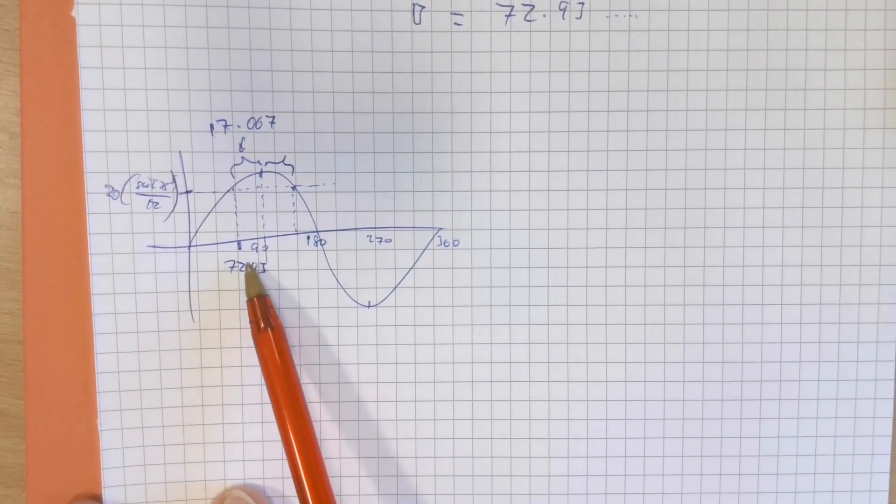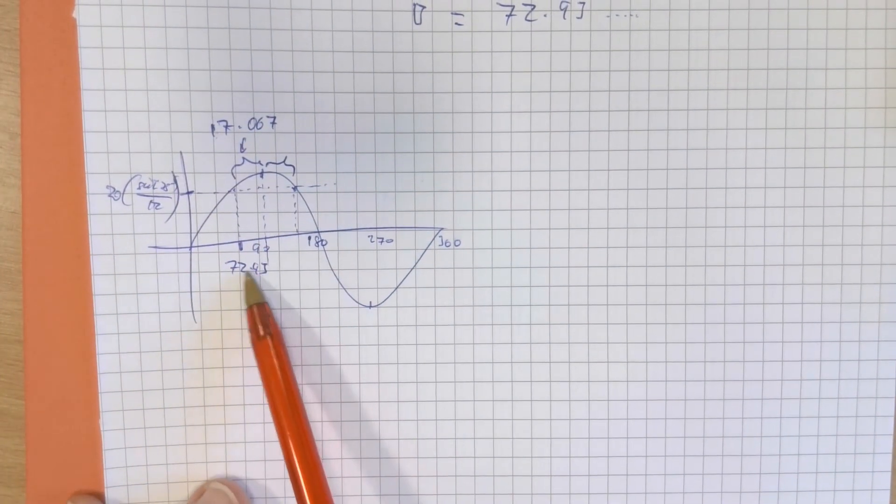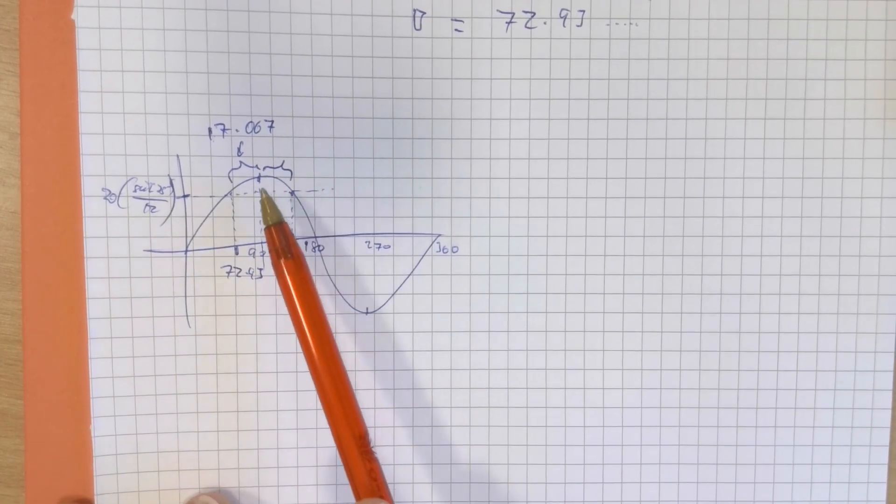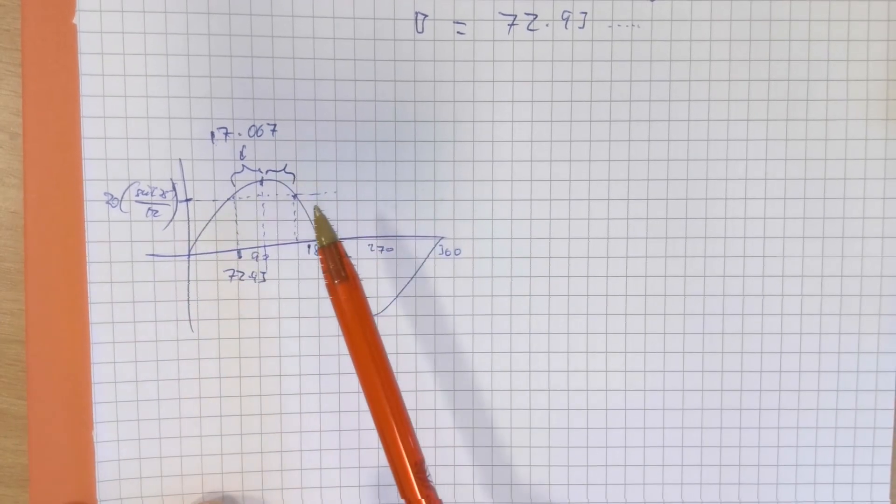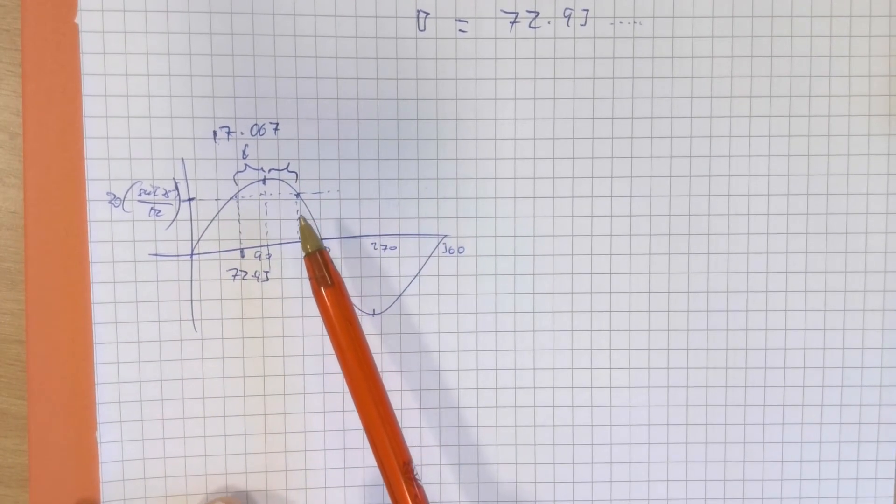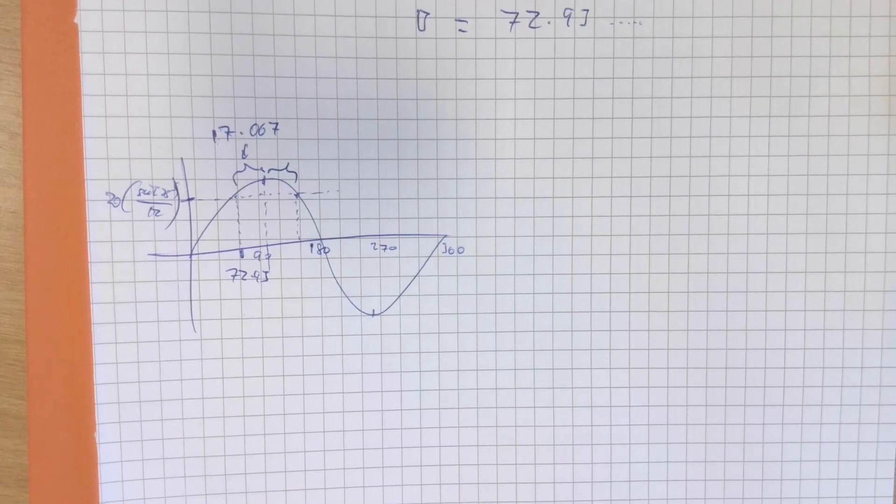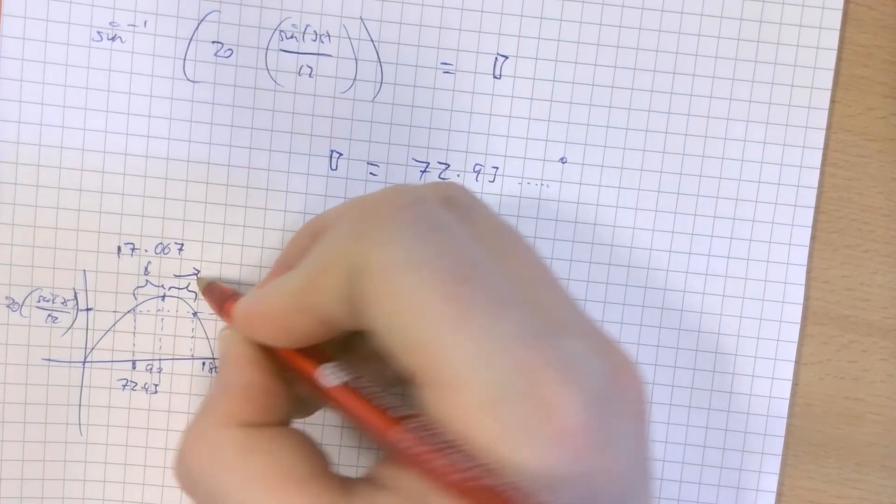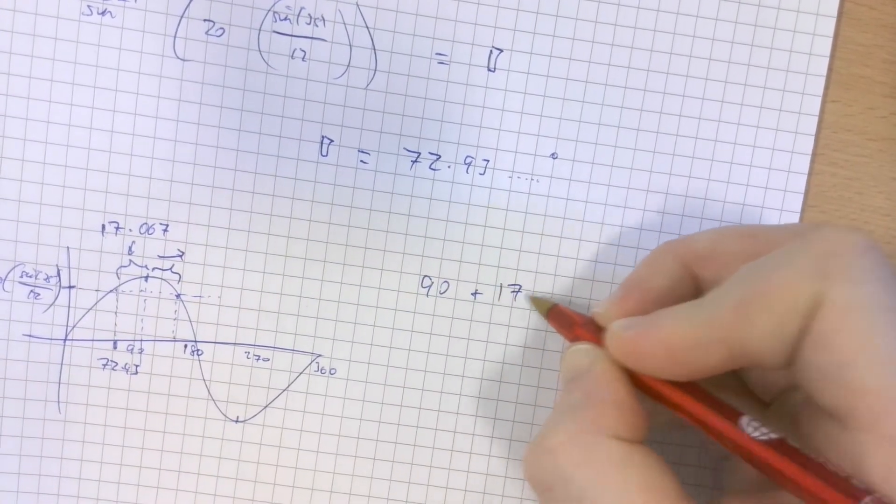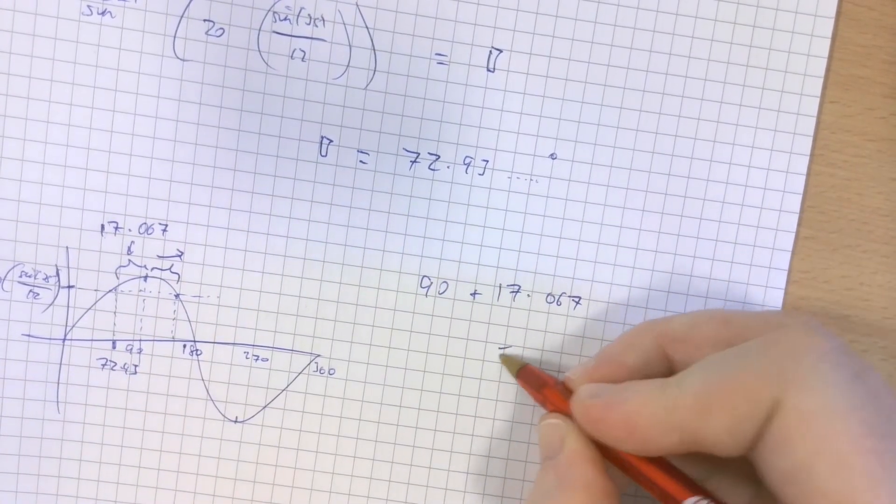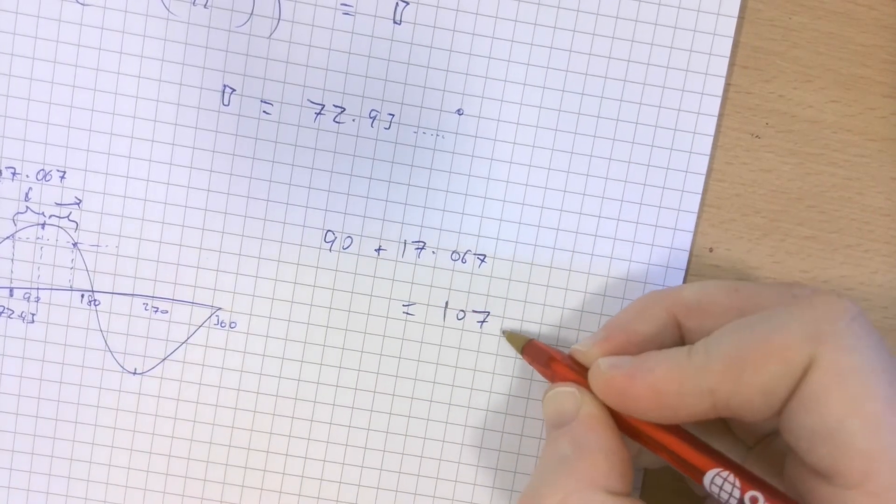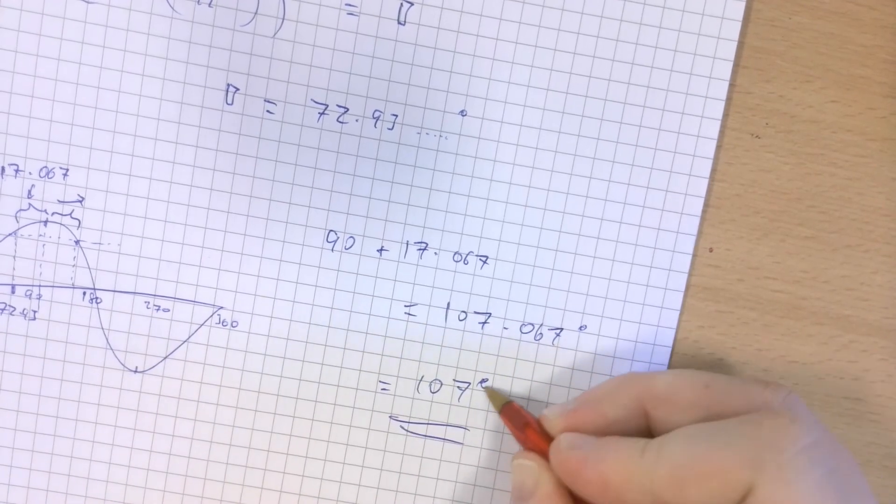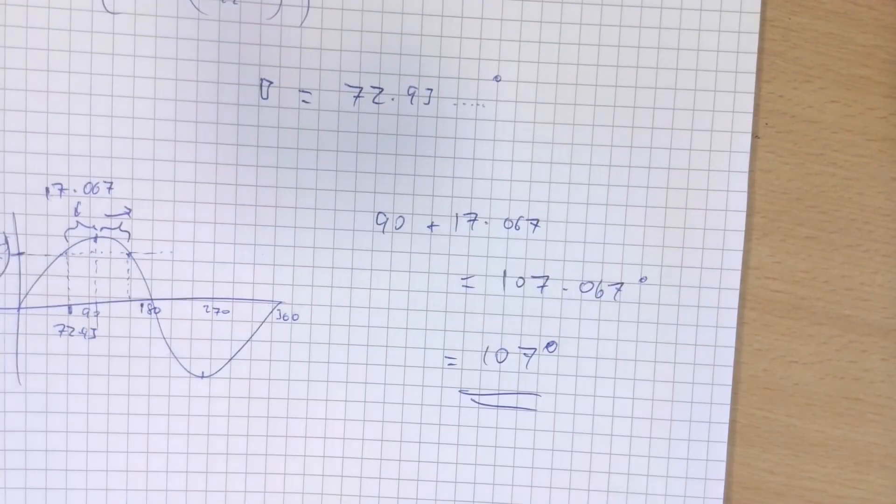So, 90 minus that answer makes about 17.067. That's the length of one of these. My initial calculation is 17.067 less than 90. The angle that I actually want is 17.067 more than 90. Effectively, 90 plus 17.067 gives me an angle of 107.067 degrees. Now, rounding to three sig figures, 107 degrees is perfectly acceptable for that question. And that answers it.